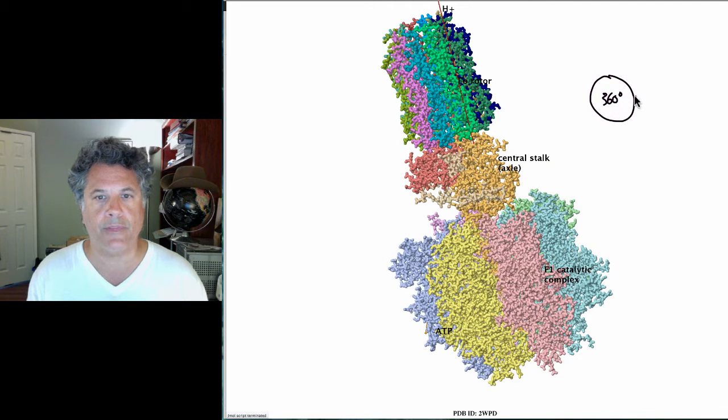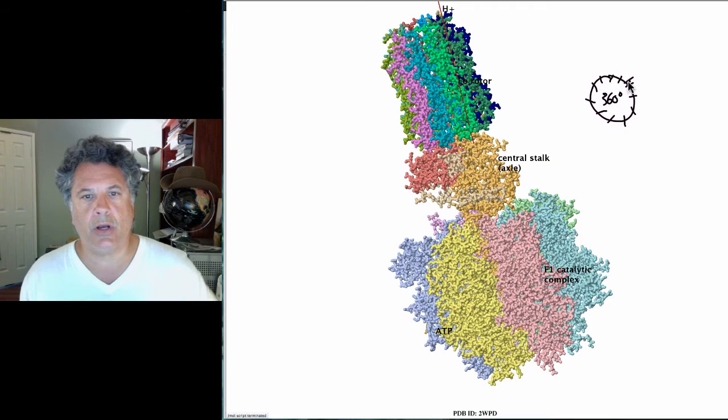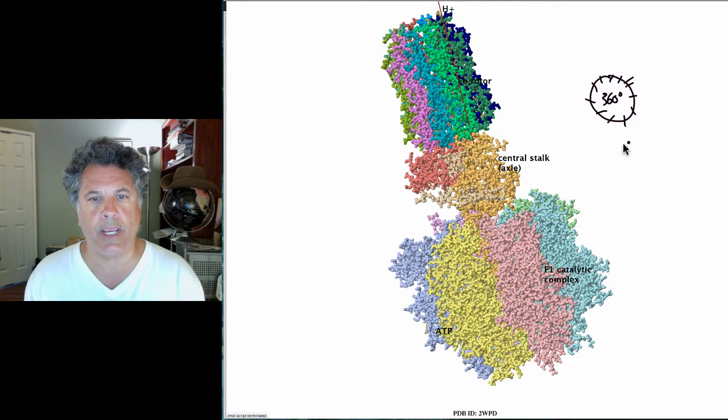We have a 360 degree rotation of the rotor, and there are 12 subunits in the ring. Each hydrogen ion that flows through and is carried around this ring rotates the ring in 30 degree increments. So there's 30 degree rotation per proton.